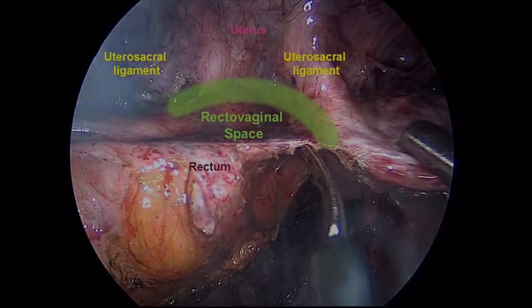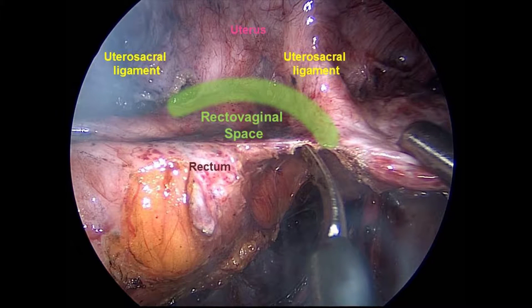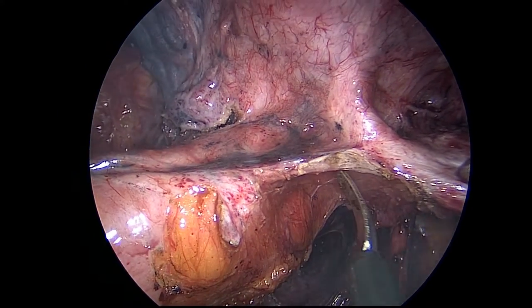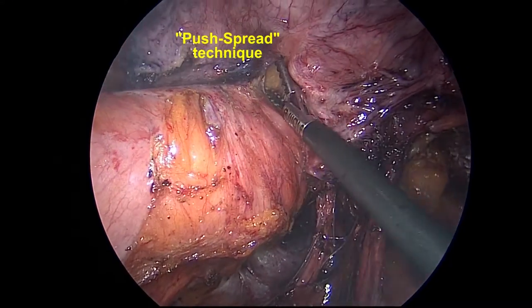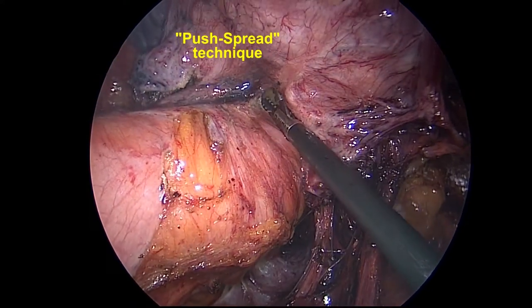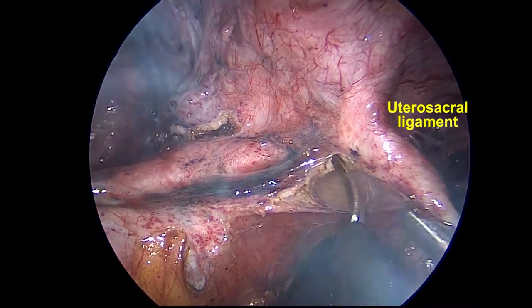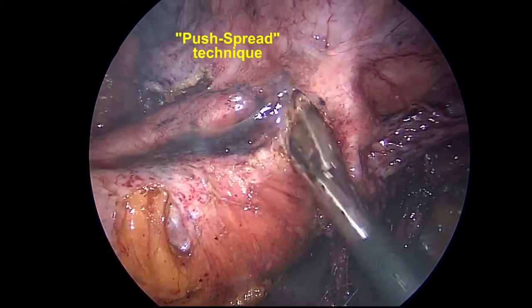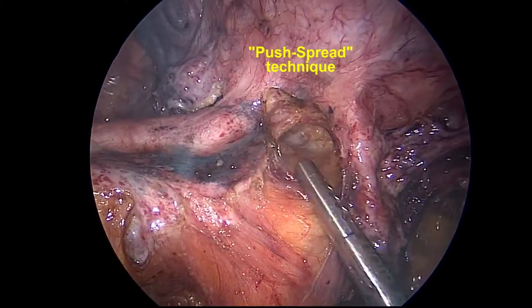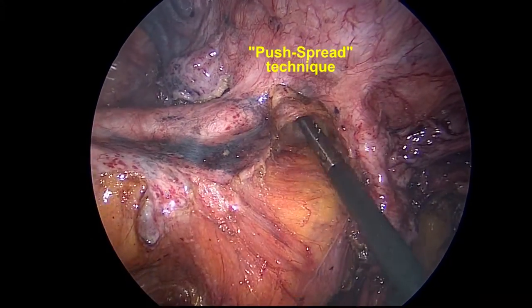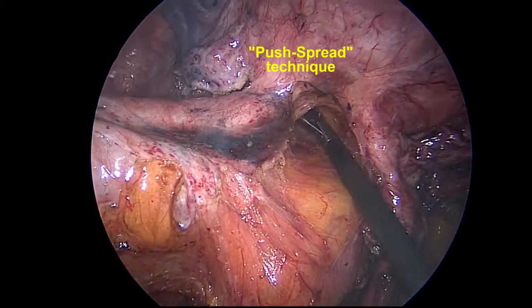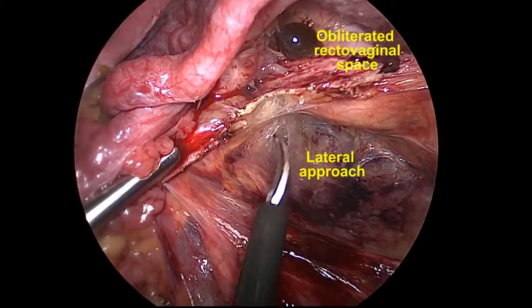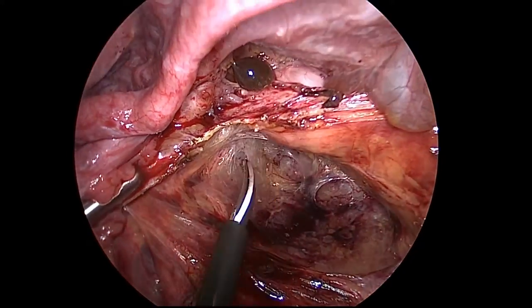The rectovaginal space lies between the rectum and the vagina and is bordered laterally by the uterosacral ligaments. The cul-de-sac peritoneum is incised with short bursts of monopolar energy. The peritoneum is undermined using a push-spread technique. The uterosacral ligaments are landmarks for orientation as well as handles for counter-traction. The space is further opened using a push-spread technique and downward sweeping motion.